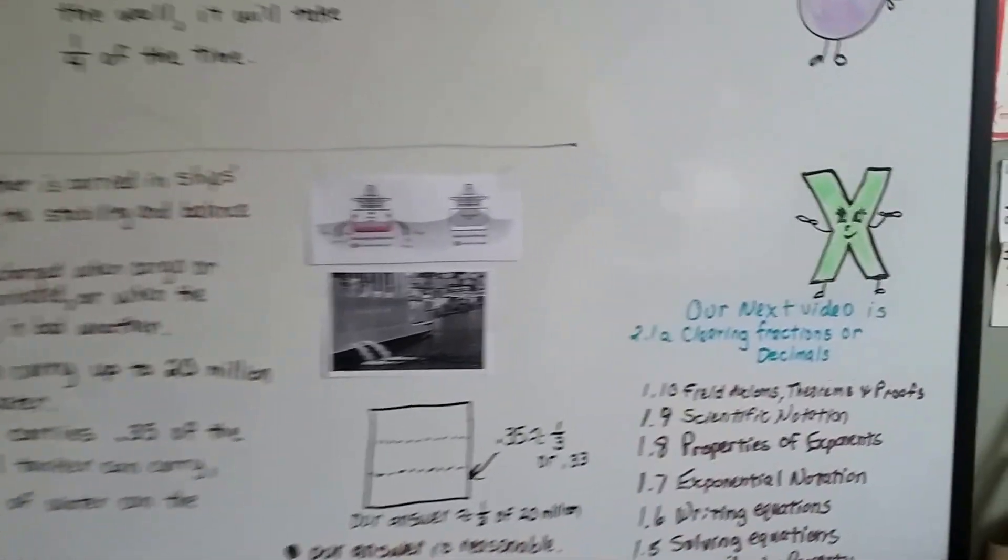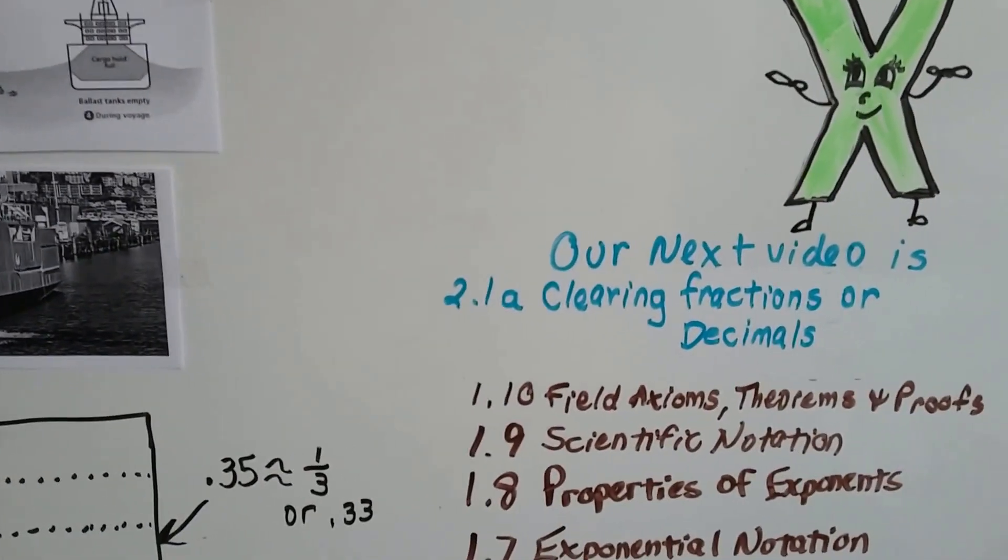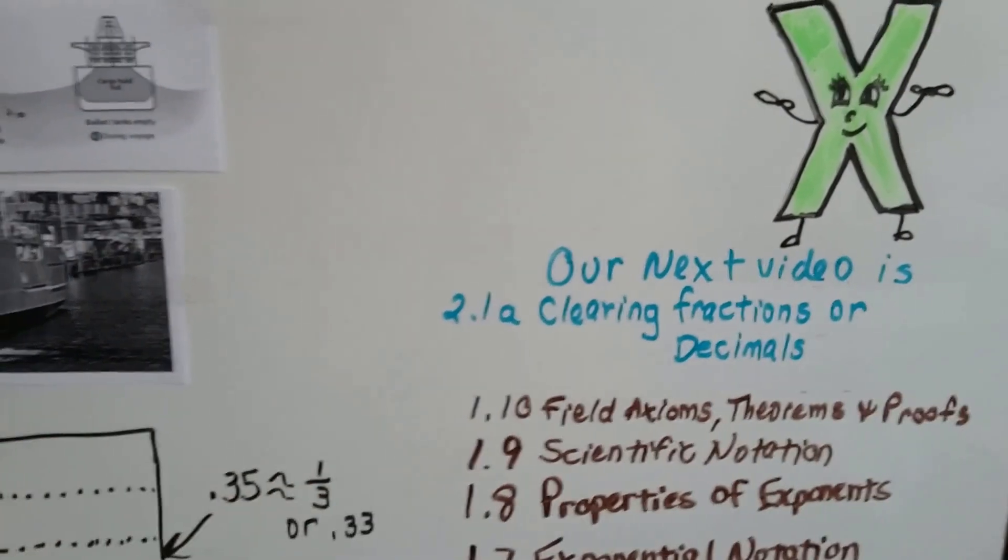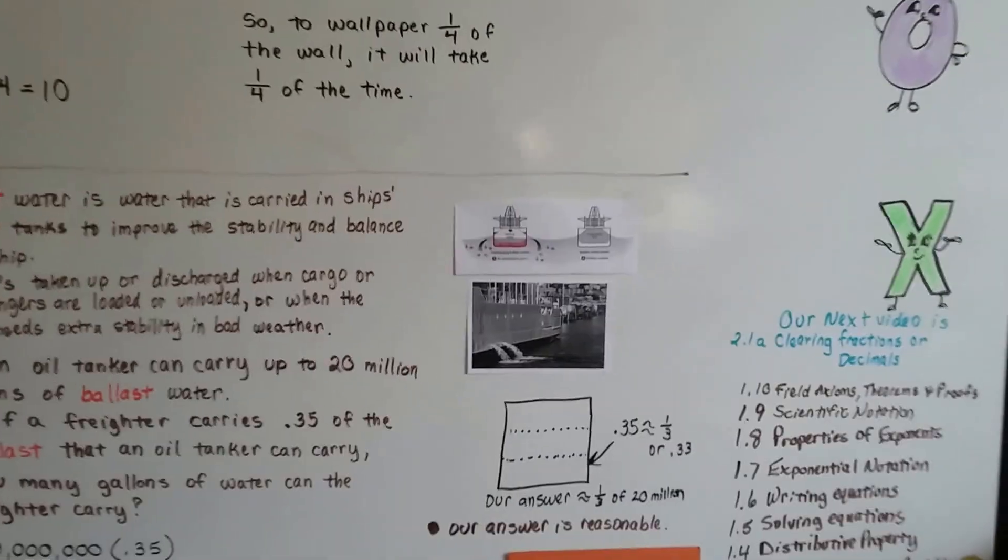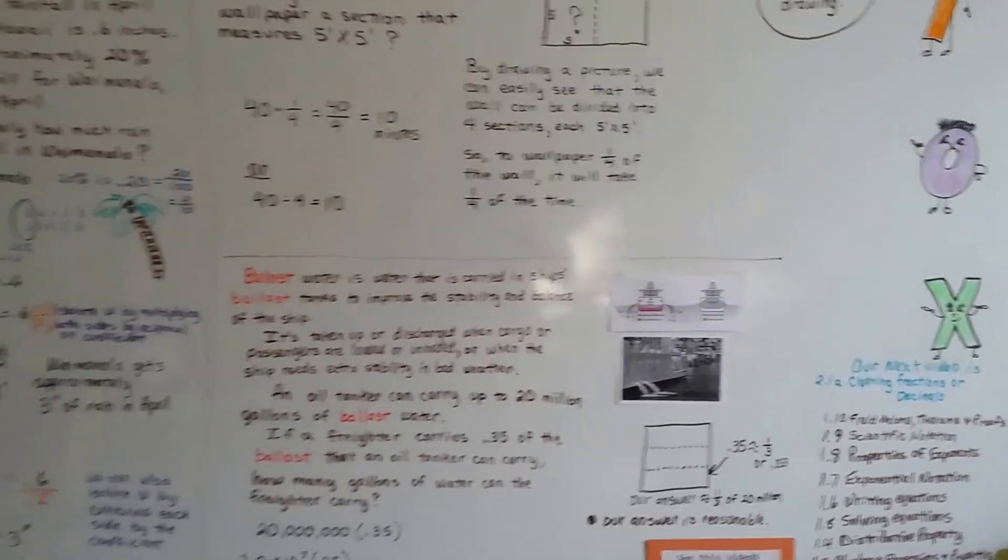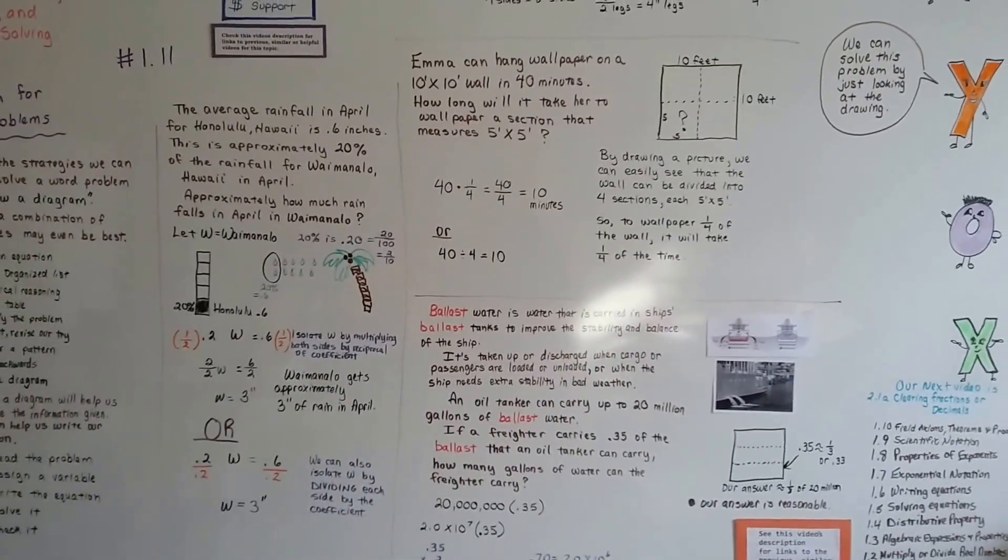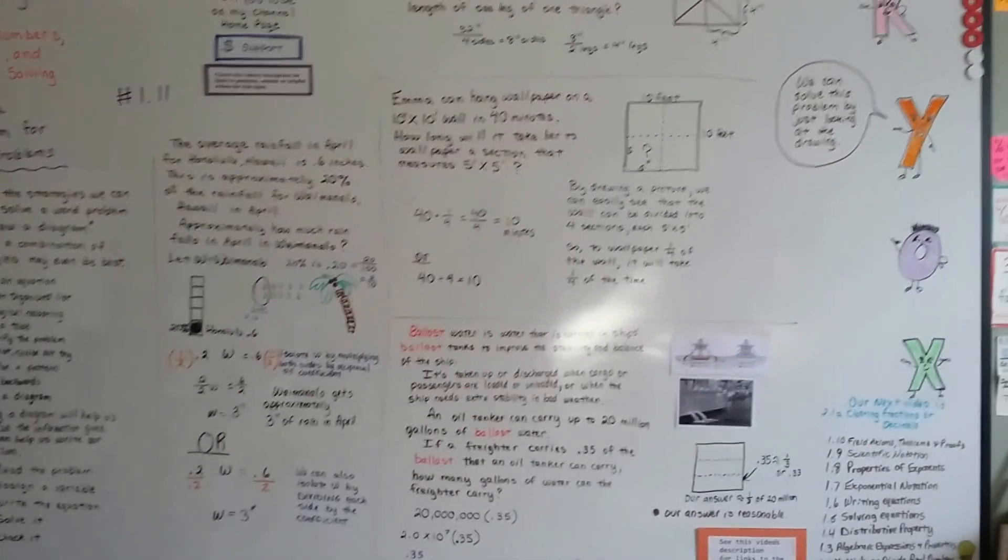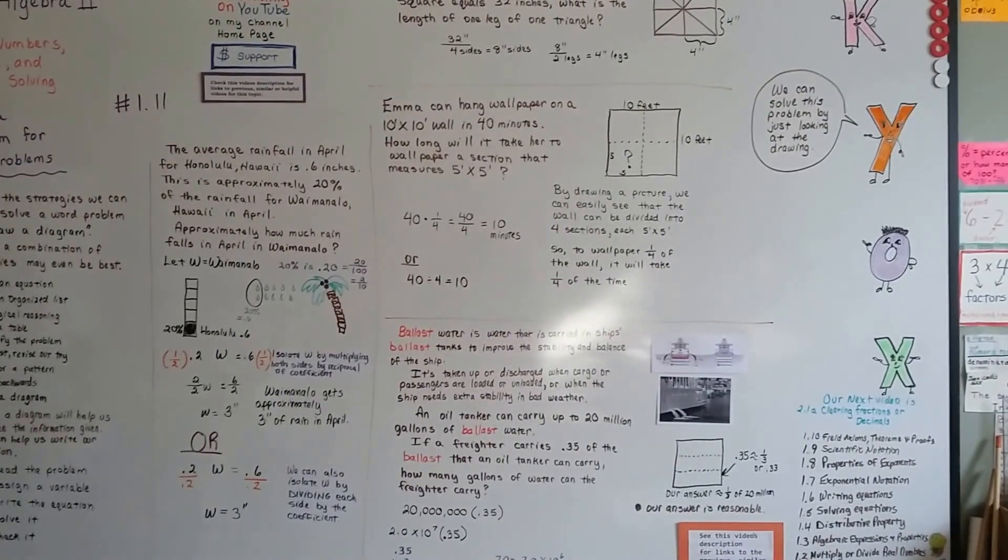So, our next video is going into Chapter 2. And we're going to talk about equations and inequalities. And the first one is about clearing fractions or decimals from equations. I know we covered that in Algebra 1, but that was a while ago. So, let's go over that again. Sorry about the glare on my board. It's kind of a beautiful day outside. Alright, I'll see you next video. Keep trying. Keep up the good work. Bye.